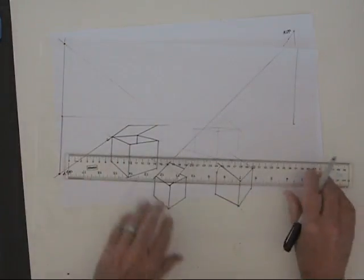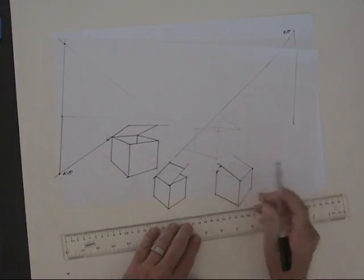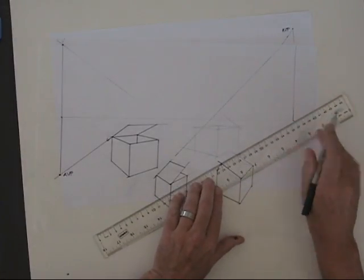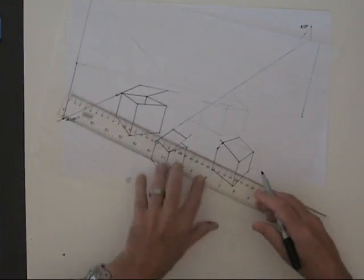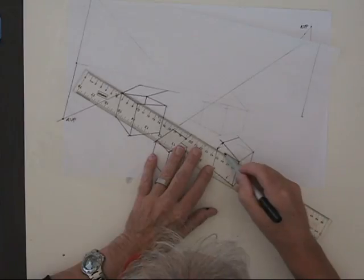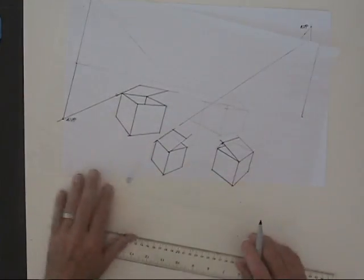And I can draw in my lid. The top of the lid, here's the estimated angle, will converge to the right vanishing point. I'll add in the box top and complete it.